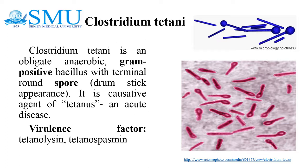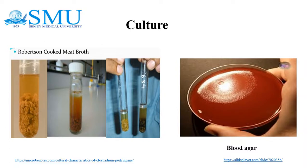Tetanus toxin is plasmid-coded. Culture characteristics: culture is more reliable than microscopy. In Robertson's cooked meat broth, Clostridium tetani, being proteolytic, turns meat particles black and produces foul odor.